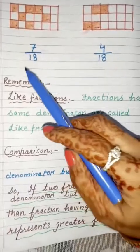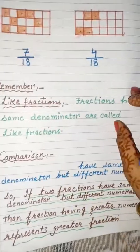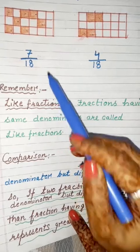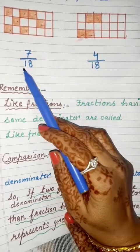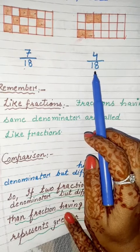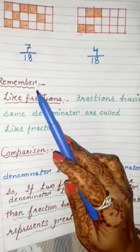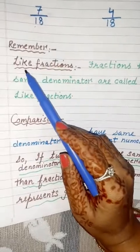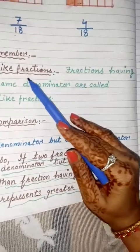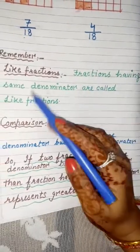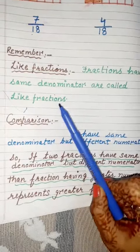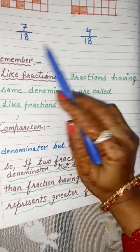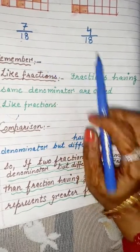So dear students, looking at these two fractions, we can see something very special — both fractions have the same denominator. We call these like fractions. Fractions having the same denominator are called like fractions.